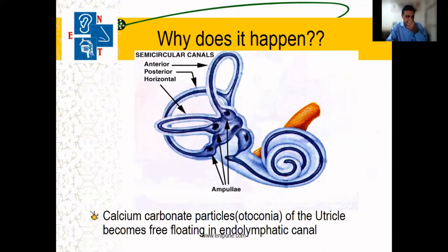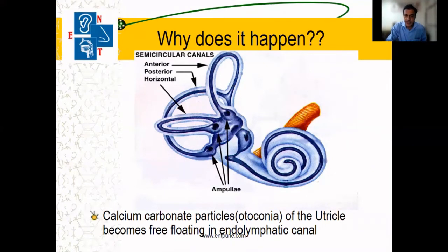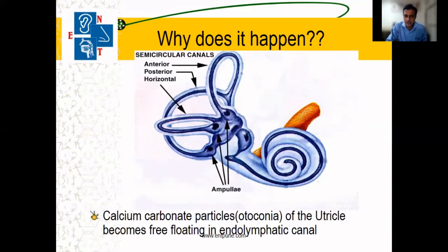These particles, for certain reasons — it can be idiopathic or due to minimal trauma — start moving or circulating in the semi-circular canals. They become free-floating, and when position changes, they stimulate the canals and the patient starts having vertigo.